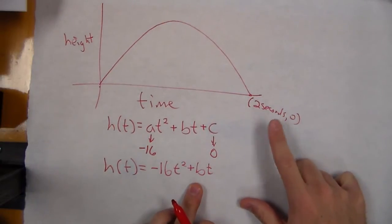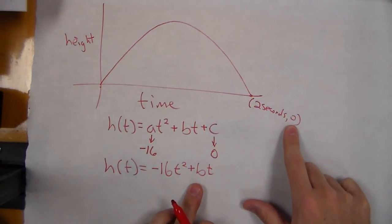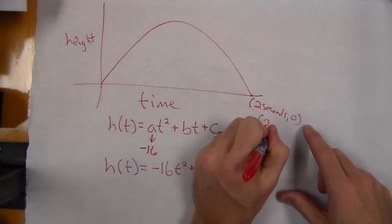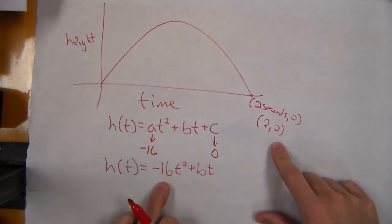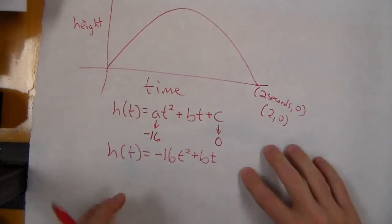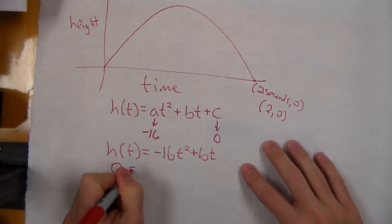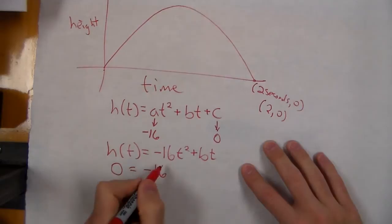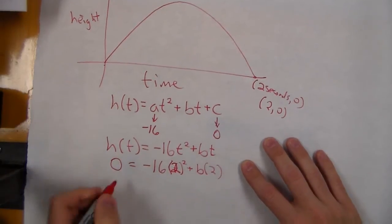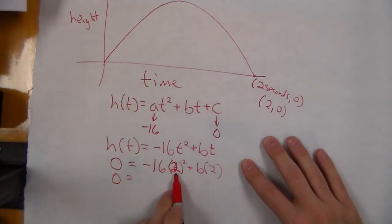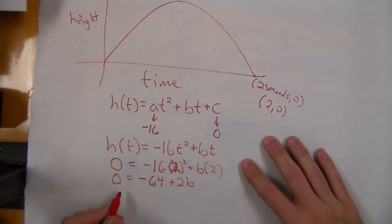If we know it reached two seconds and the height was zero, we can plug that coordinate (2,0) in for t and h(t) to solve for b. So 0 = -16(2)² + b(2). Two squared is four, we get -64 + 2b. We then get 64 = 2b and b = 32.